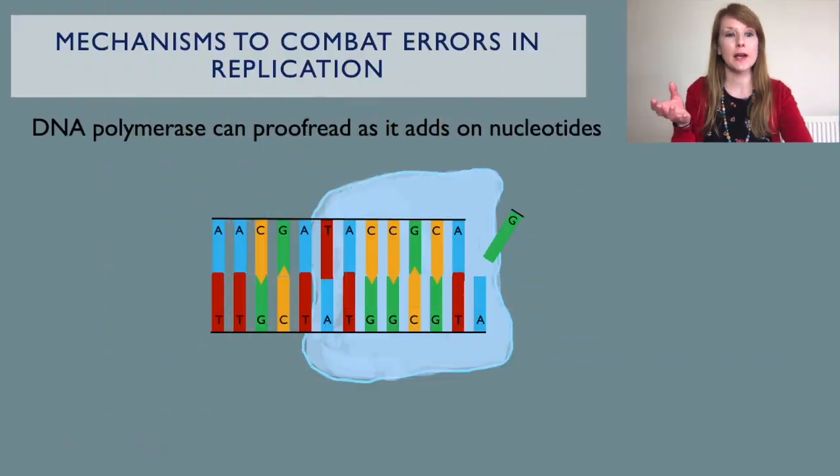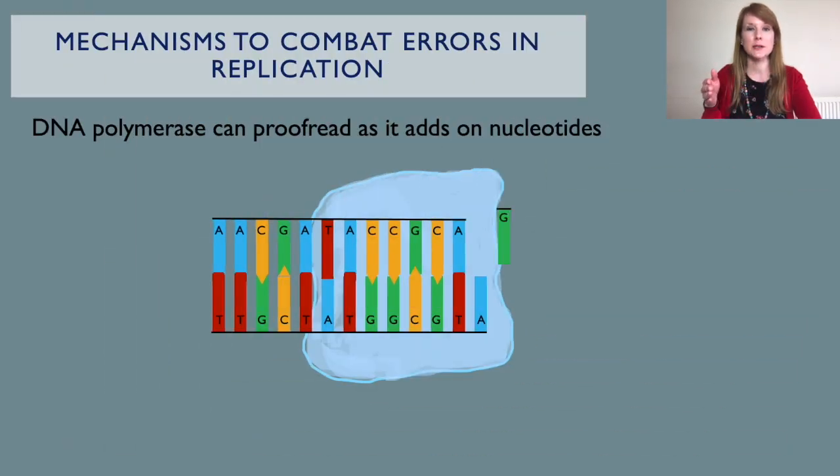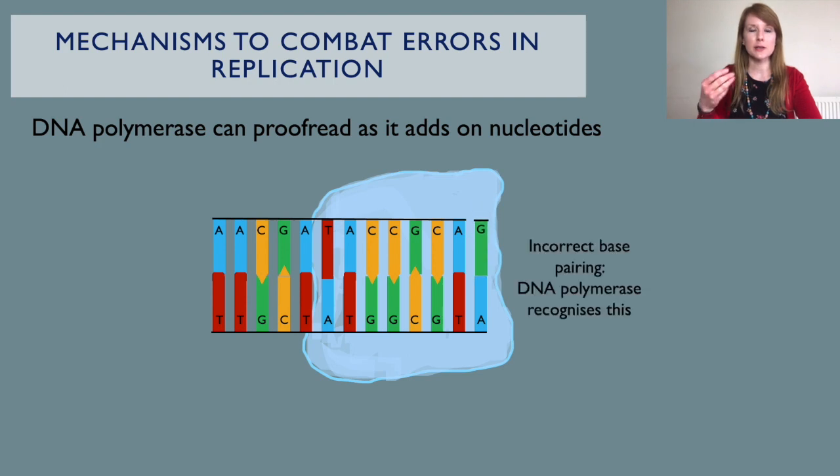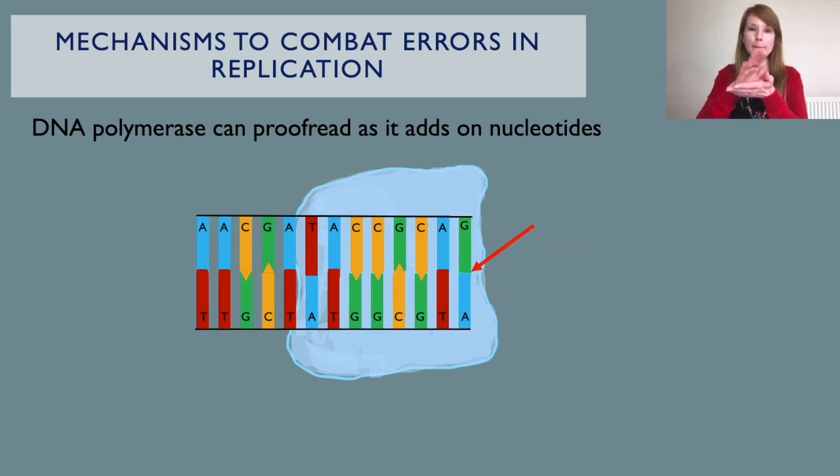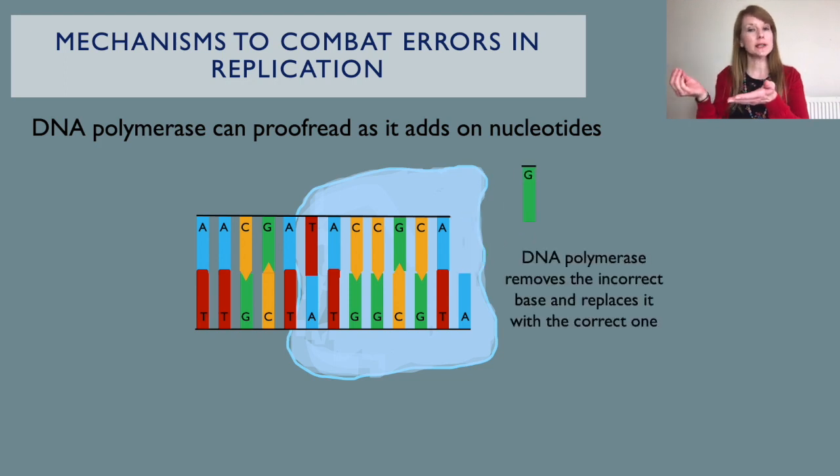If these can't fix the problem, then a cell will often undergo programmed cell death, also known as apoptosis, so that it won't pass these mistakes on to the next generation of cells. Processes that help keep the integrity of DNA include the ability for DNA polymerase to proofread as it adds on nucleotides. If it adds on an incorrect nucleotide that doesn't complementary base pair with the template strand, it can remove this and add on the correct one. Mistakes which are made and missed by the polymerase can be fixed by another group of proteins that can recognise mistakes and cut out the piece of DNA containing the error — this might be something like a small insertion or a mismatched base.